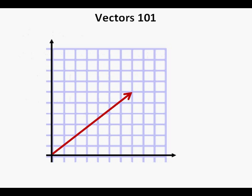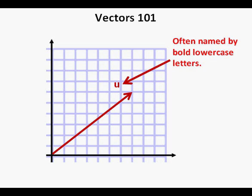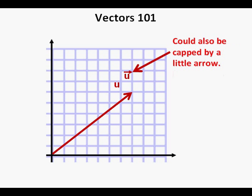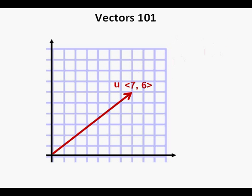Here's a drawing of the first vector we'll look at. This is what a graphed vector looks like — an arrow. We'll call this vector vector u. Vectors are often named as lowercase bold letters. Sometimes you'll see the vector written as a bold lowercase letter with a little line segment or arrow over it. We place the coordinates of vector u as 7, 6. Note that instead of parentheses surrounding the coordinates, we have angular brackets. The angular brackets signify that this arrow is a vector.